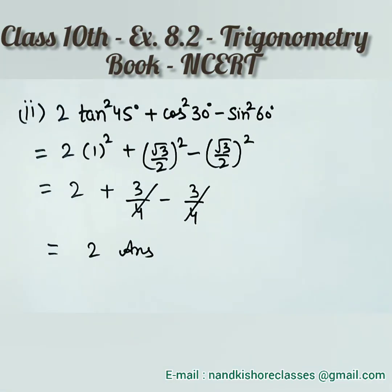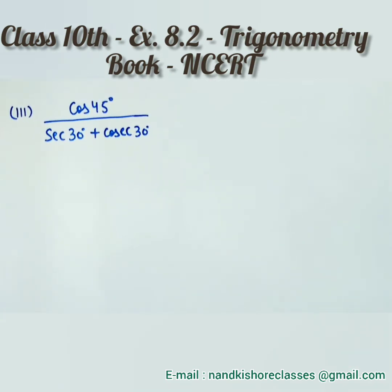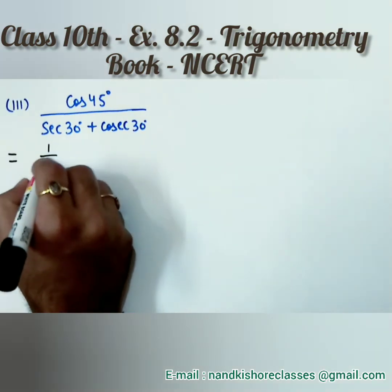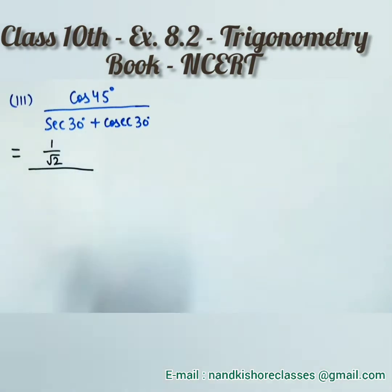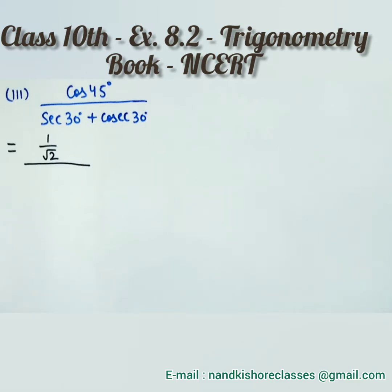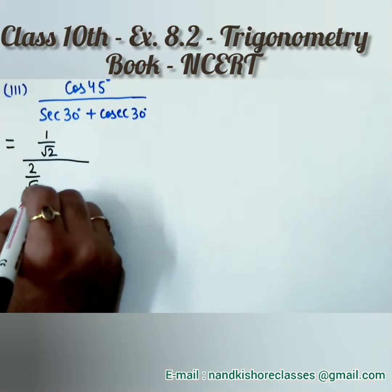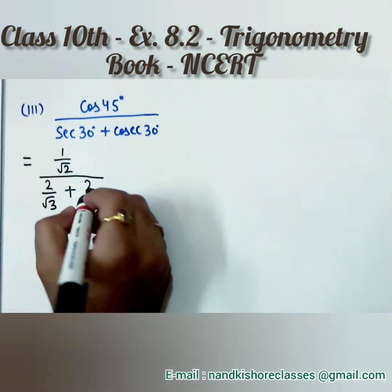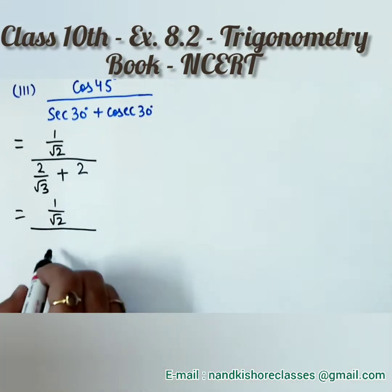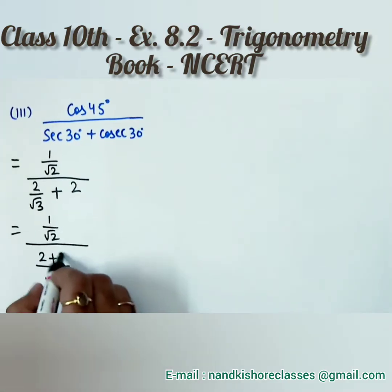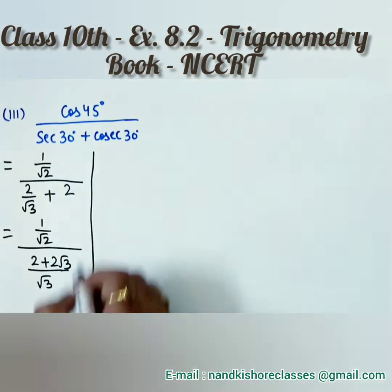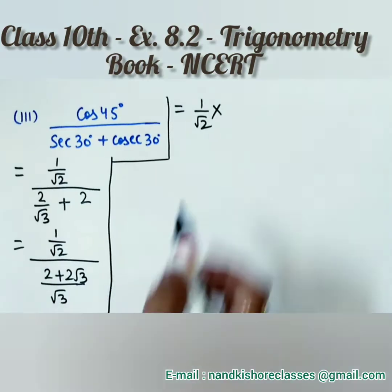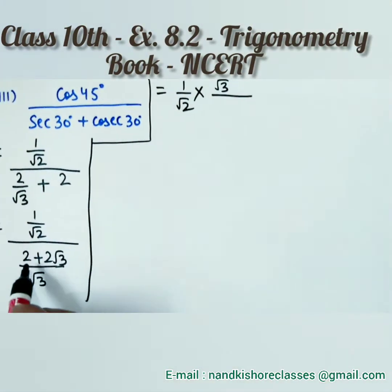Let's move to Part 3: cos 45 over (sec 30 + cosec 30). The value of cos 45 is 1 by root 2. Sec 30 is the reciprocal of cos 30; cos 30 is root 3 by 2, so sec 30 is 2 by root 3. Cosec 30 is the reciprocal of sin 30; sin 30 is 1 by 2, so cosec 30 is 2. Taking LCM in the denominator gives root 3 as LCM, giving 2 plus 2 root 3. So we have 1 by root 2 on top and (2 + 2 root 3) over root 3 on the bottom.